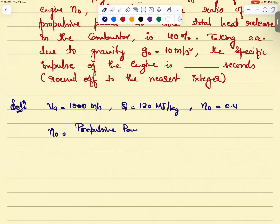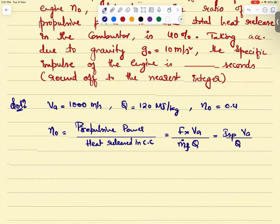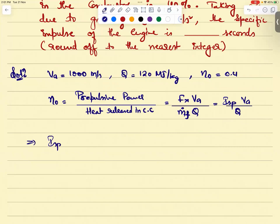4,800. Very good, keep it up. V is 1000 meter per second, Q is 120 megajoule per kg, and overall efficiency they gave us 40 percent. So what is the overall efficiency? They gave the definition also for you, how they are defining it. Propulsive power divided by heat released in combustion chamber.